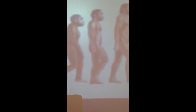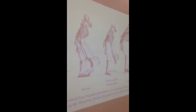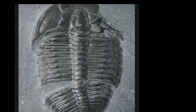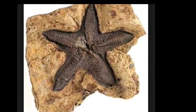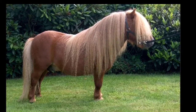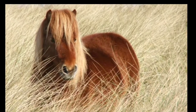Is evolution all about how humans came from monkeys? No, it is not. It's about change over time. Fossils show us what earth was like millions of years ago — it's the evidence of evolution. The Shetland ponies have changed over time. They used to have really short hair, but where they are located, they had to grow long hair to stay warm.